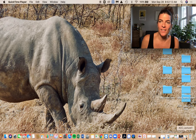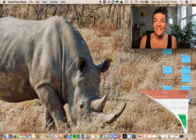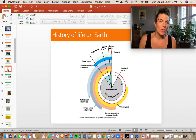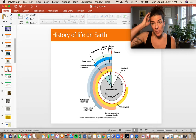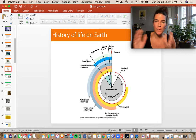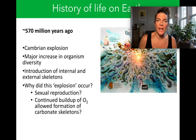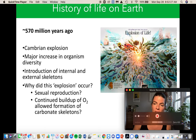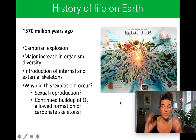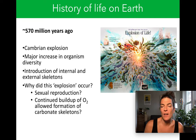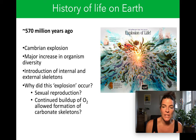Continuing where we left off, we were talking about how this major event occurred around 550 million years ago, which we refer to as the Cambrian Explosion. It really was a metaphorical explosion of life on Earth — a major increase in the diversity of organisms, a major increase in the sheer number of unique, different types of organisms on the Earth.